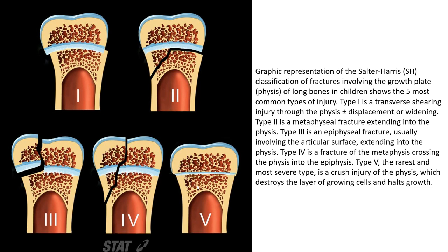Type 3 is an apophysis fracture that usually involves the articular surface and extends into the physis. Type 4 is a fracture of the metaphysis crossing the physis into the epiphysis. Type 5, the rarest and most severe type, is a crush injury of the physis which destroys the layer of growing cells and impairs growth.